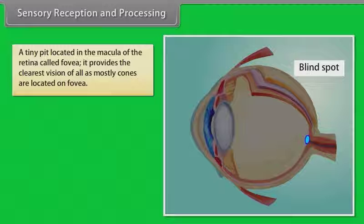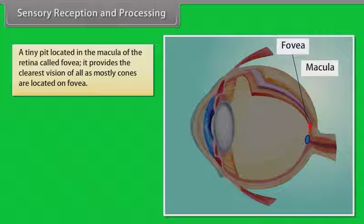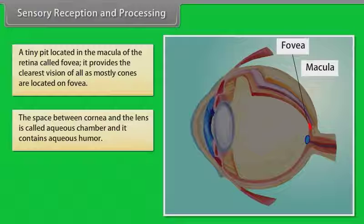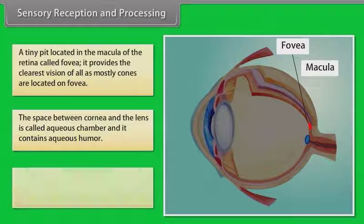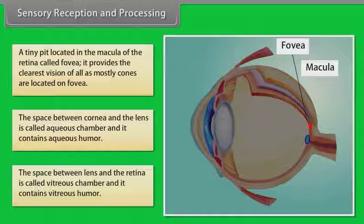A tiny pit located in the macula of the retina is called the fovea. It provides the clearest vision as mostly cones are located on the fovea. The space between the cornea and the lens is called the aqueous chamber and contains aqueous humour. The space between the lens and the retina is called the vitreous chamber and contains vitreous humour.